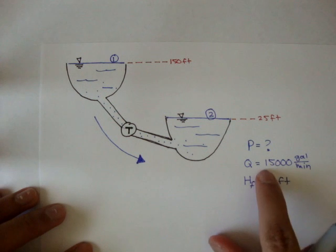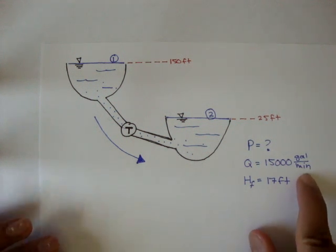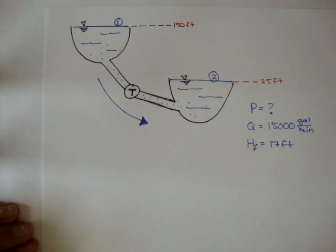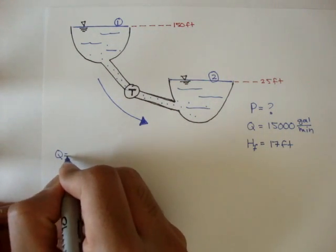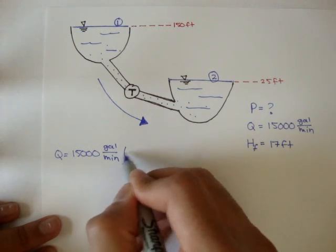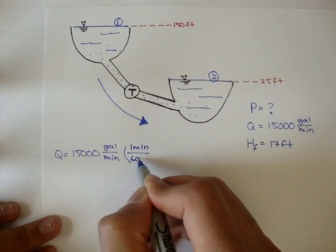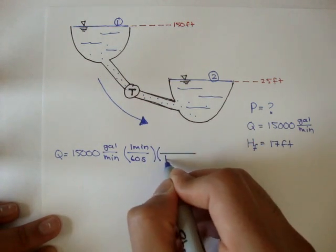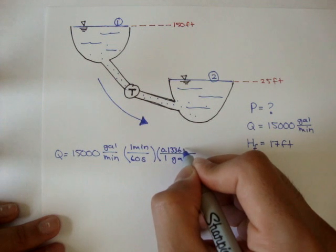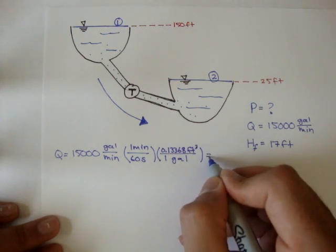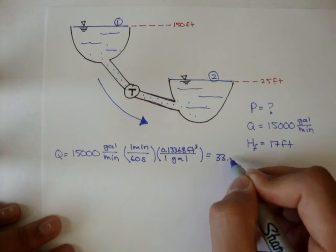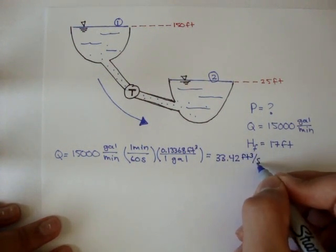The first thing we want to do is change this gallons per minute to something we like, and in this case it would be feet cubed per second. So we can say Q, which is equal to 15,000 gallons per minute, and in 1 minute there are 60 seconds, and in 1 gallon there is 0.13368 feet cubed. Kind of a yucky number, but if we do the math, we get that the volumetric flow rate is about 33.42 feet cubed per second.